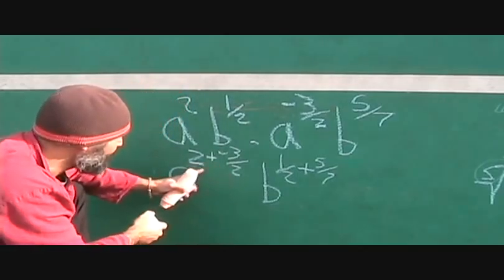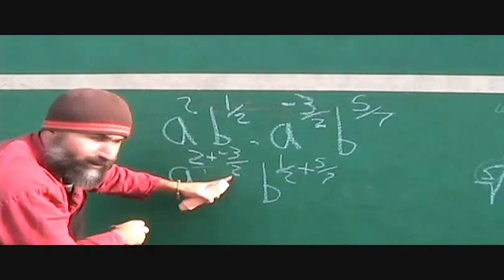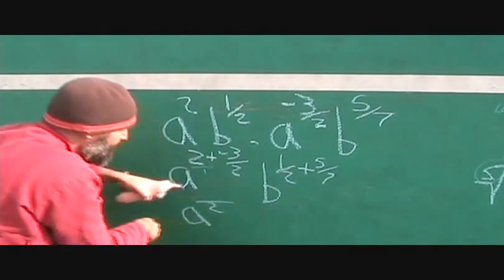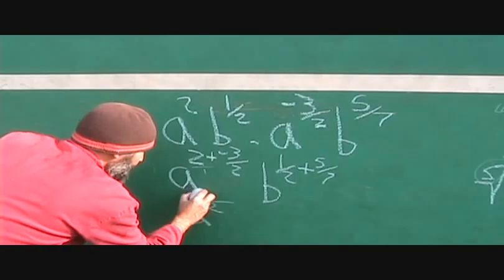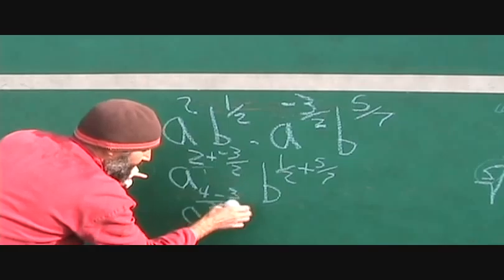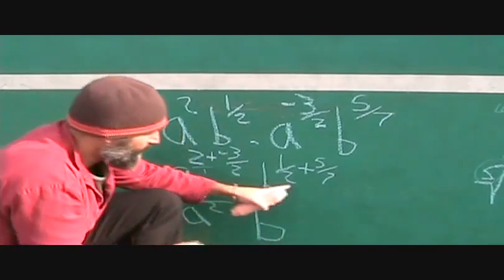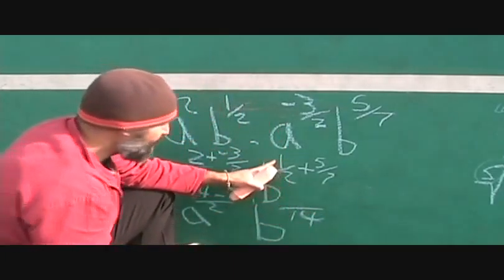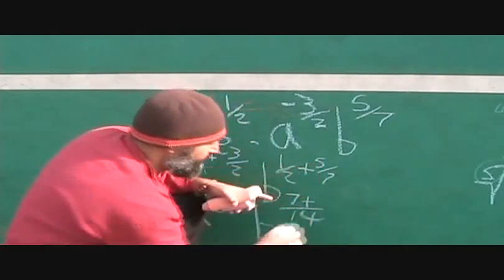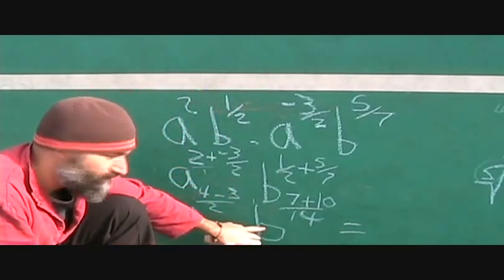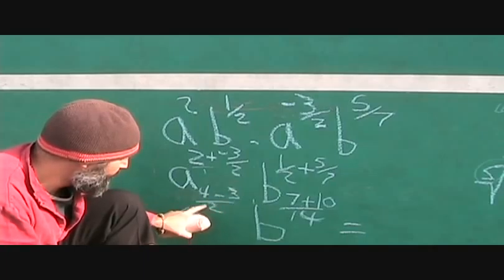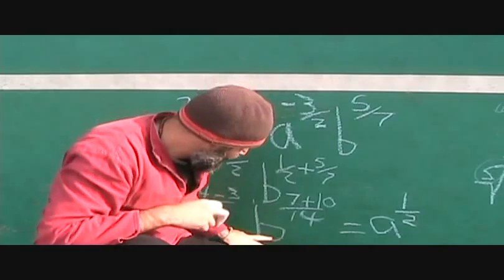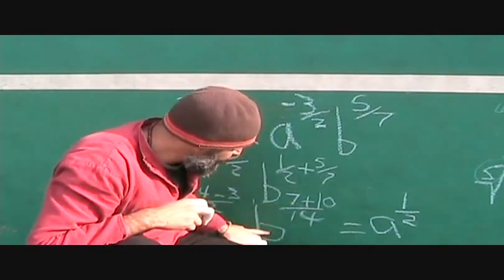You've got to find the common denominator. For the a exponent, 2 is just over 1, so the common denominator is 2. Multiply 2 by 2 to get 4, minus 3, giving a to the power of 4 minus 3 over 2. For the b exponent, the common denominator between 2 and 7 is 14. Multiply the half by 7 to get 7, and multiply 5 over 7 by 2 to get 10. So 4 minus 3 is 1, giving a to the power of one half. And 7 plus 10 is 17, so it's b to the power of 17 over 14.